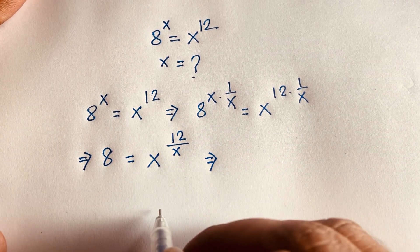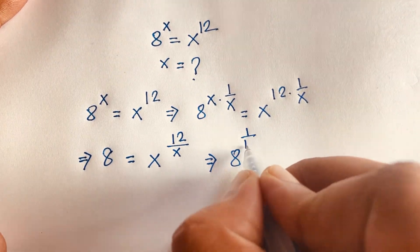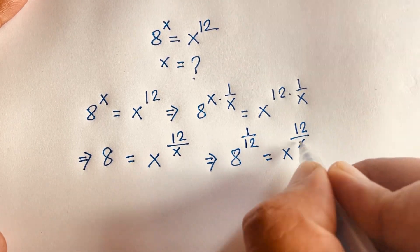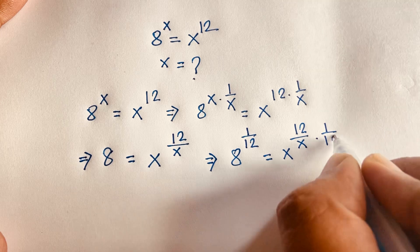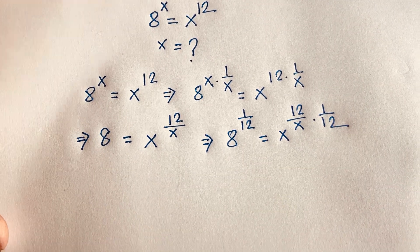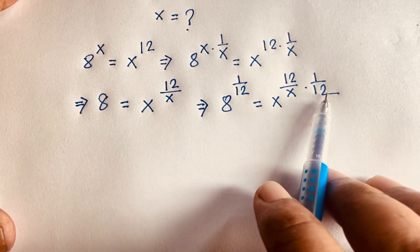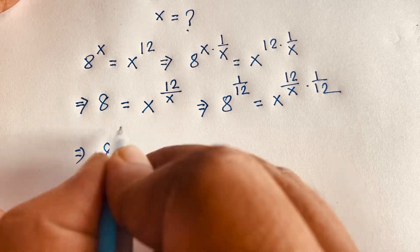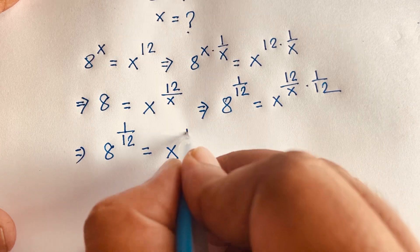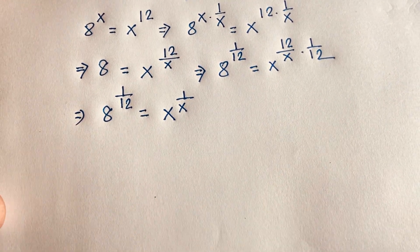Now I apply exponent 1 over 12 to both sides. So 8 to the power 1 over 12 is equal to x to the power 12 over x times 1 over 12. The 12s cancel, giving us 8 to the power 1 over 12 is equal to x to the power 1 over x.